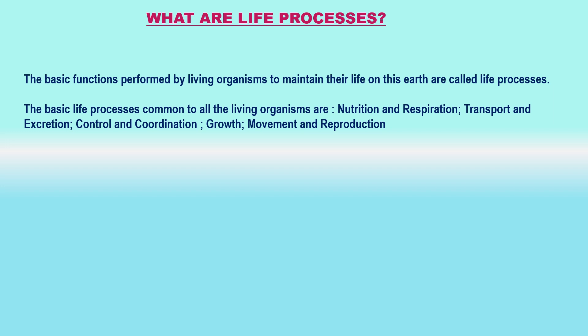Control and coordination is a process which helps living organisms to survive in the changing environment around them. In movement, the organism either moves from one place to another or moves its body parts while remaining at the same place. The process of reproduction involves the making of more organisms from existing ones so that organisms could live on this earth forever.